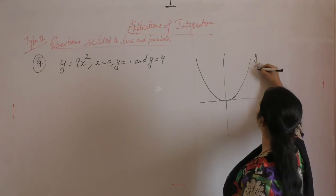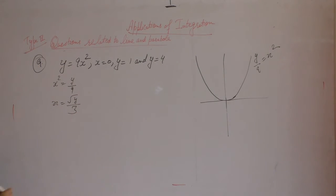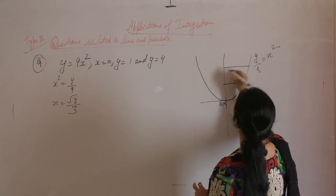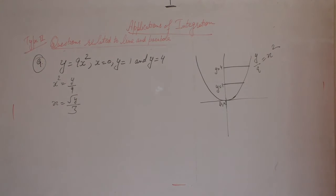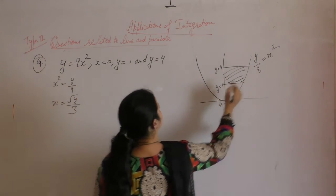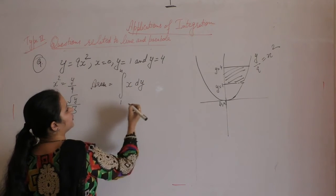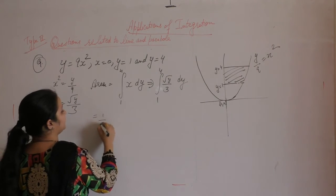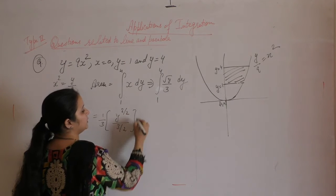This is the curve y/9 = x². The points are x = 0, y = 1, and y = 4. We need to find the area between these two points. Area = ∫x dy, limit from 1 to 4. The value of x is √(y)/3, so the integral is (1/3) ∫y^(1/2) dy, giving y^(3/2) / (3/2), with limits 1 to 4.